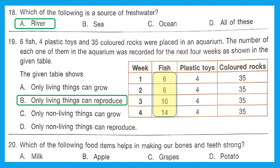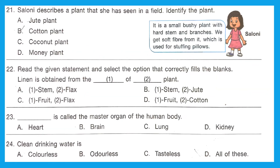Question 20: Which food item helps in making our bones and teeth strong? We all know that it is milk. Option A is correct.